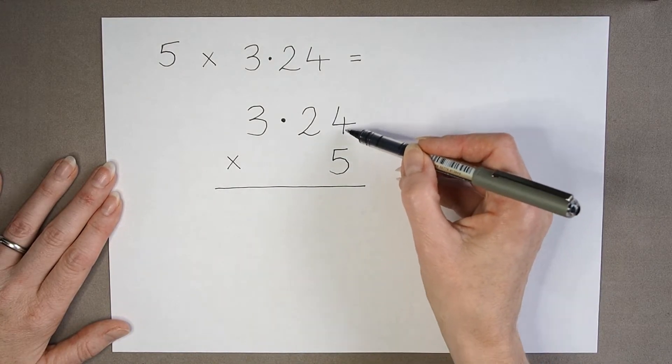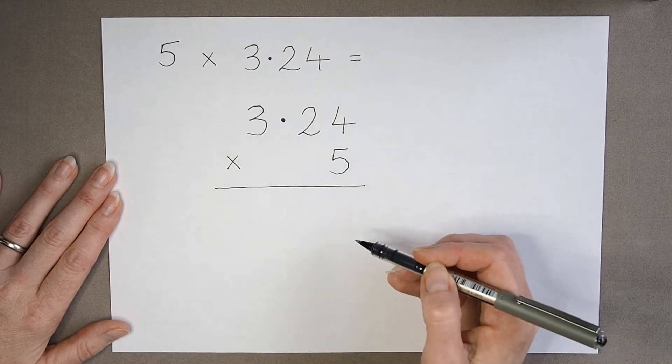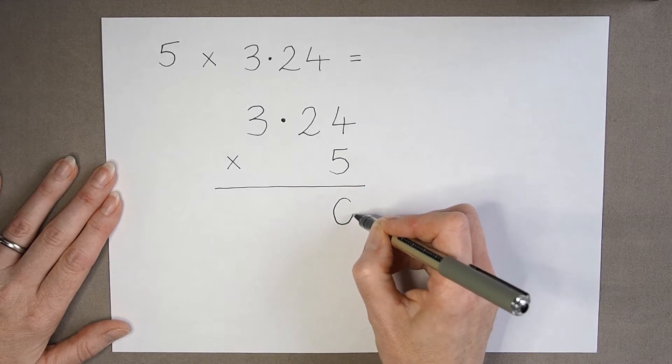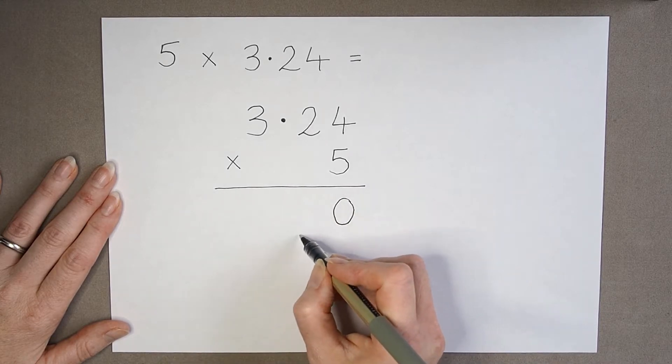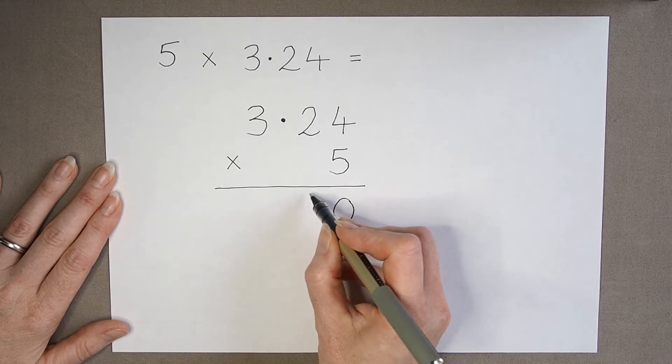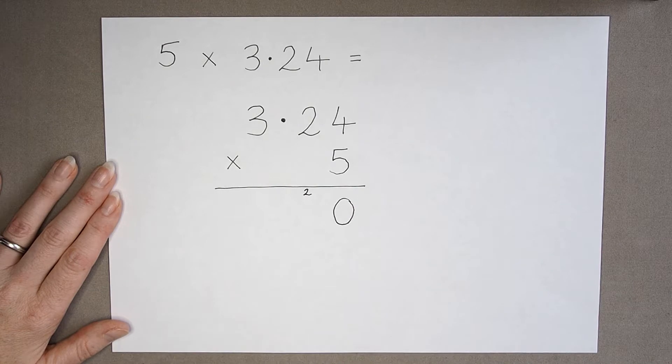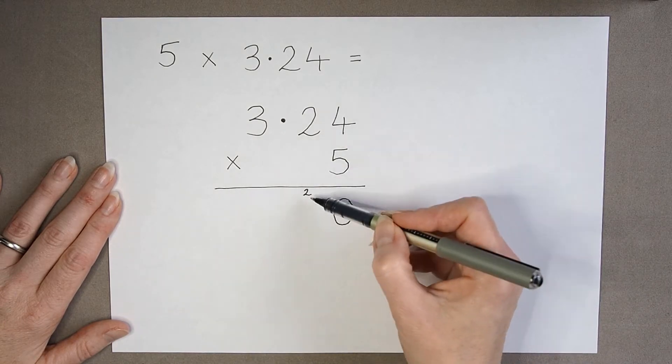And then I start here now in my hundredths column, and I say 5 times 4 is 20. So I'm going to write down the zero, and I'm going to have the 2. So I can either carry it up here or down here. I'm going to put it up here, because if we're doing long multiplication later, that keeps it out of the way. So 5 times 4 is 20.